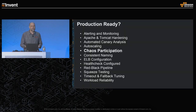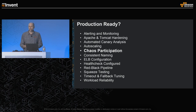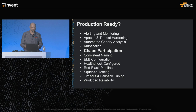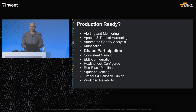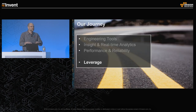Just like the paved road, we have another wrapping strategy called 'production ready.' This is essentially all of the best practices and technologies we recommend that our microservice owners adopt in order to have a resilient service. Chaos participation is one aspect of that larger picture. You also need a great alerting and monitoring strategy, red-black deployments, and squeeze testing so you can detect performance drift over time.